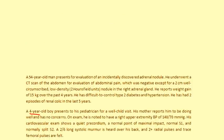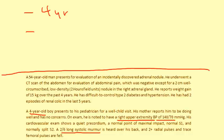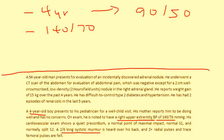Clinical vignette two: A 4-year-old boy presents for a well-child visit with a right upper extremity blood pressure of 140 over 70. He has a 2/6 long systolic murmur heard over his back, 2+ radial pulses, and trace femoral pulses. Normal blood pressure for a 4-year-old is about 90 over 50, so 140 over 70 is high. Combined with the upper-versus-lower extremity discrepancy, this is coarctation of the aorta.